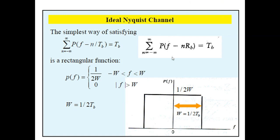The simplest way to satisfy these equations is for the frequency function PF to be in the form of a rectangular function. PF equals 1 upon 2W, between minus W and plus W. In this diagram, we show PF. If we normalize, then the value goes from minus TB to TB, or normalized as minus 1 to plus 1, with F divided by TB on the axis.